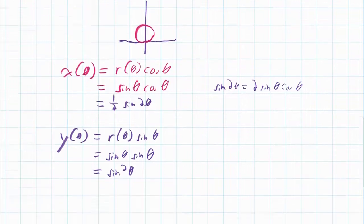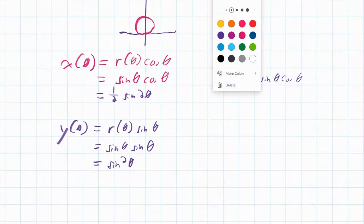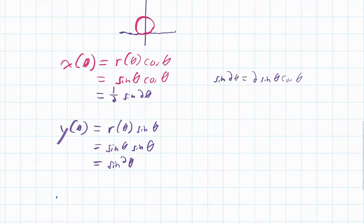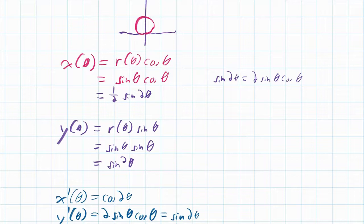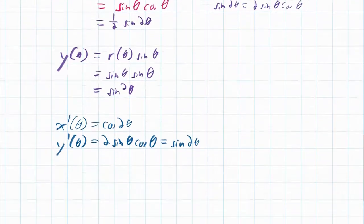Now for derivatives: x′(θ) = cos(2θ), using the chain rule on (1/2)sin(2θ). And the derivative of y(θ) = sin²(θ) is y′(θ) = 2sin(θ)cos(θ), which by the double-angle identity equals sin(2θ).